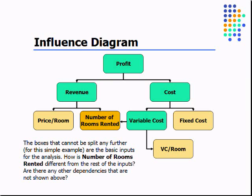But in this very simple example, we have revenue from the price of the room multiplied by the number of rooms rented. And then we have the cost side, which will be our fixed cost and our variable cost, which we'll multiply by the number of rooms to get a variable cost per room.